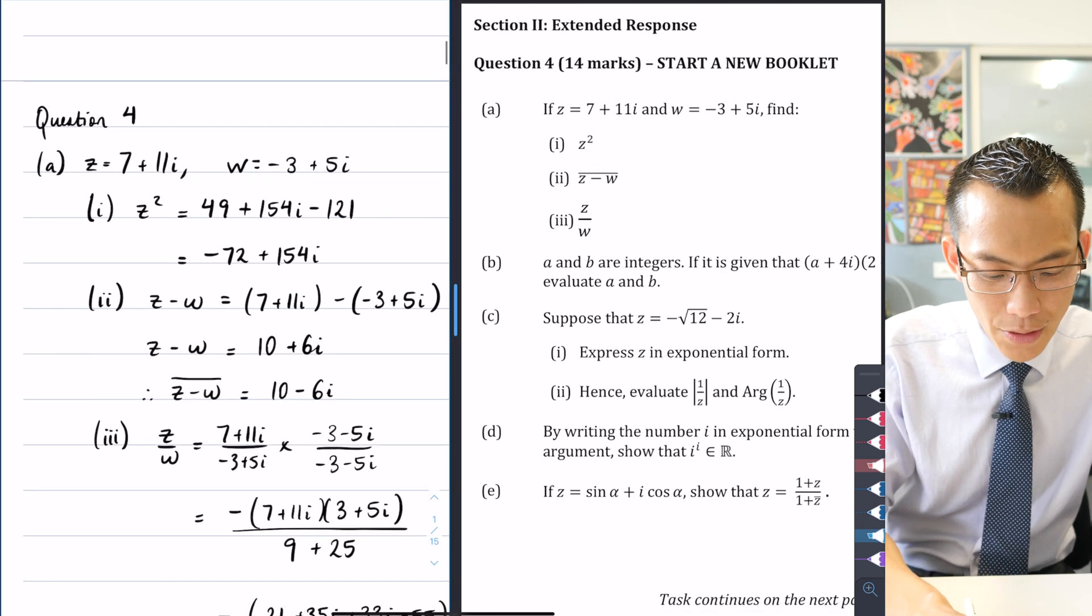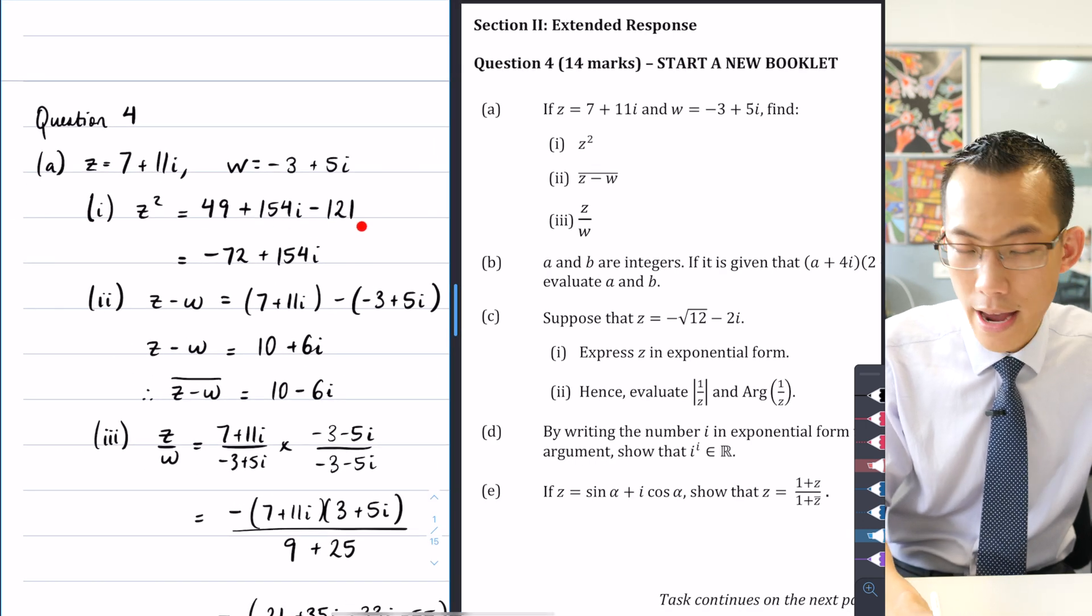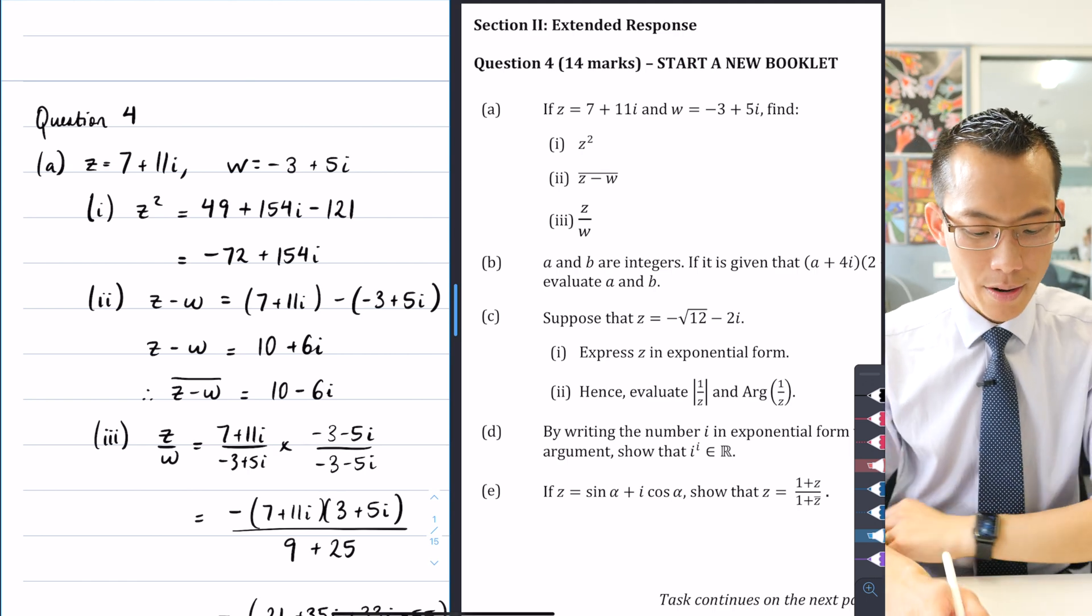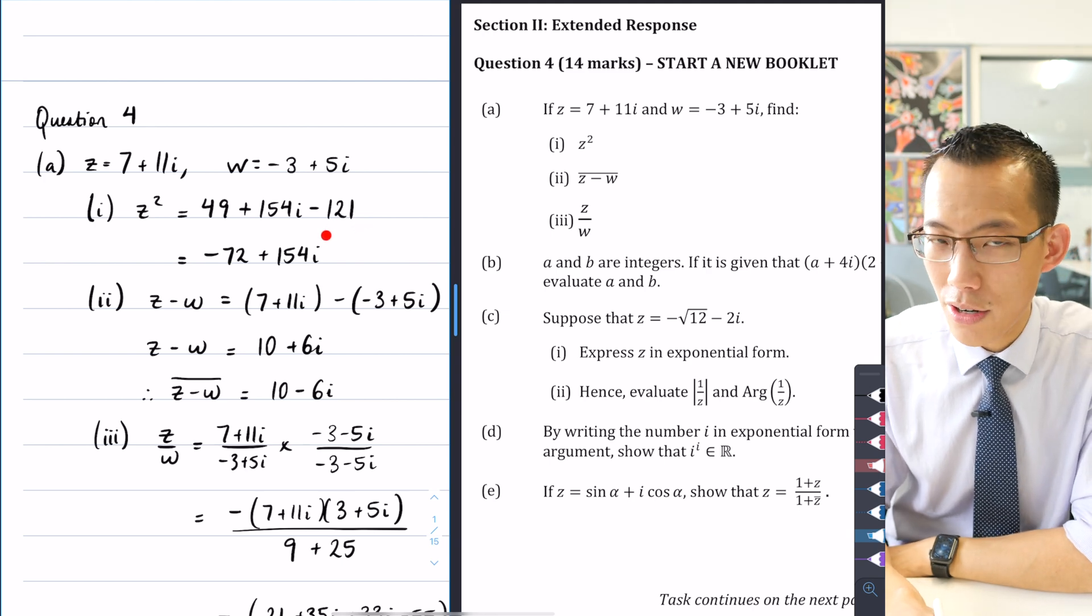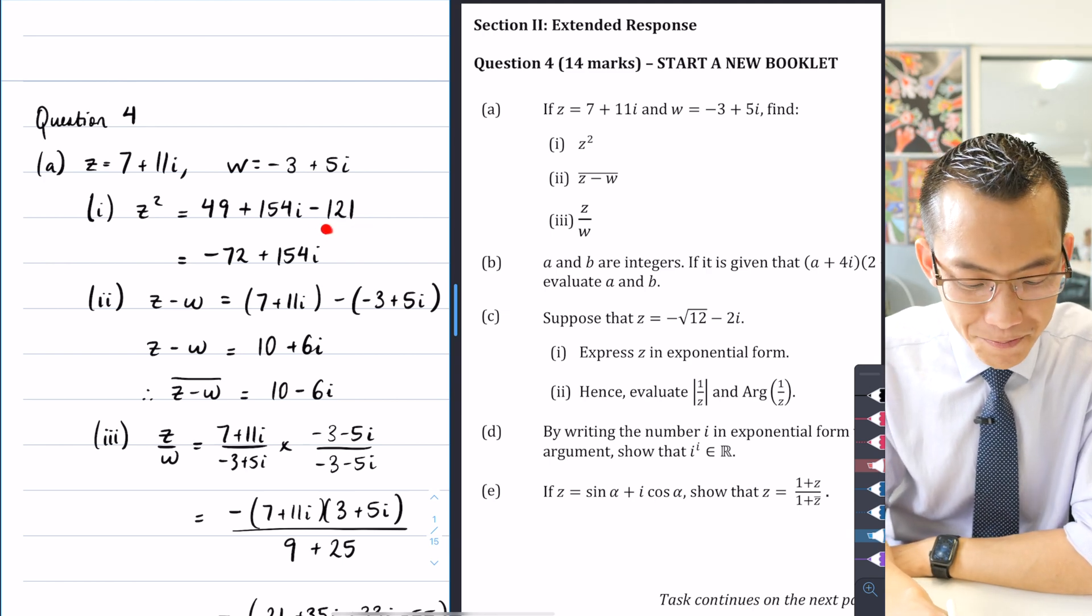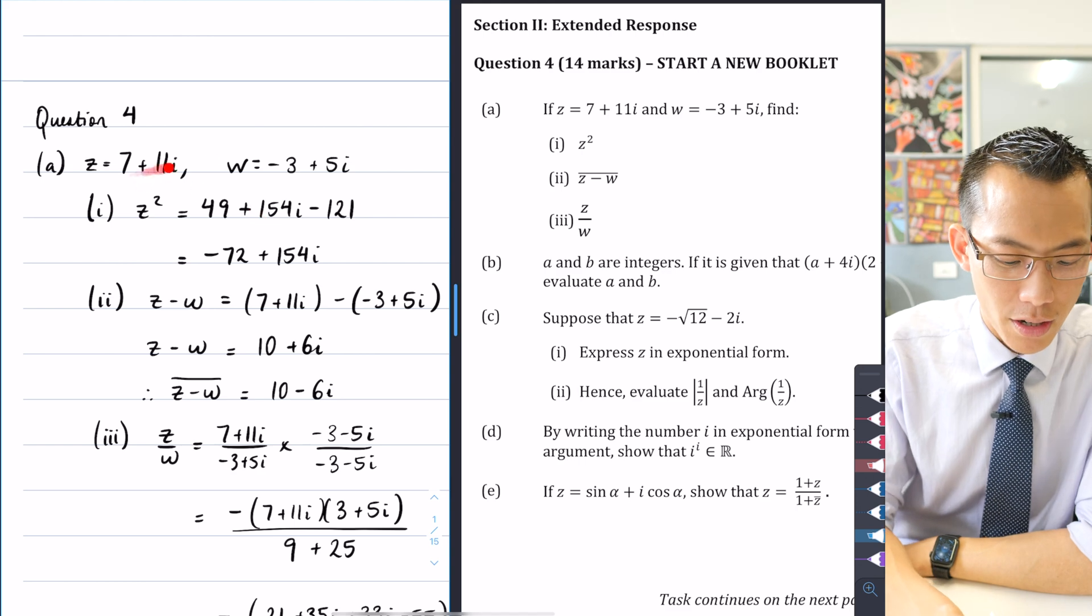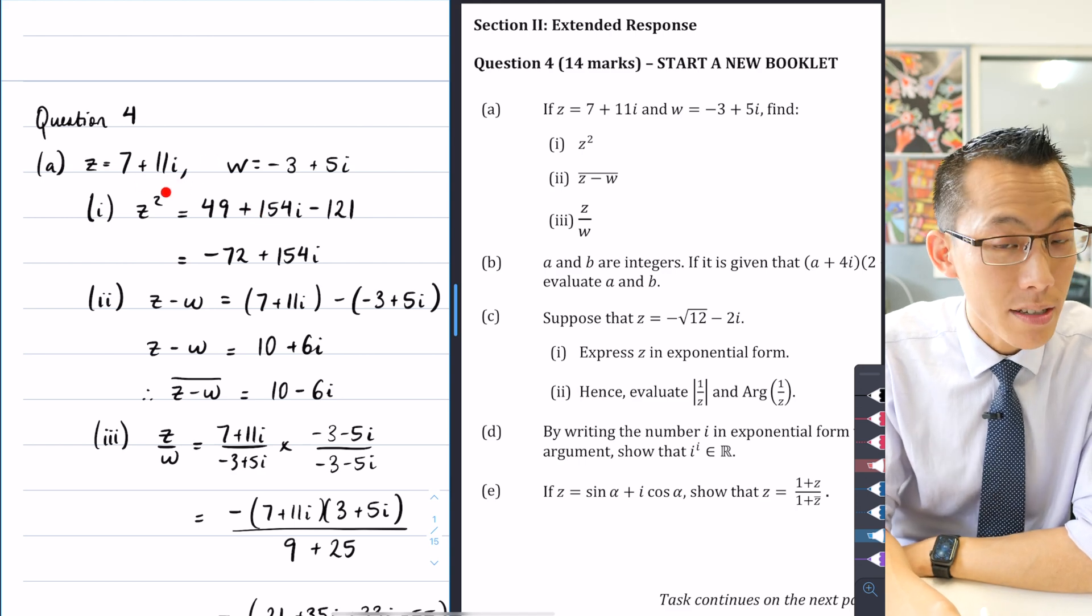You can see all I've done here is this is just 7 + 11i, and I've just expanded the brackets when I square it. So there's my 7², there's my 11i² (noting that the i² has become -1), and this is double the product of these two. So 77i is the product of these two, you double that, you get 154i. Don't forget that your complex numbers do have imaginary parts, so this is what you get for z².